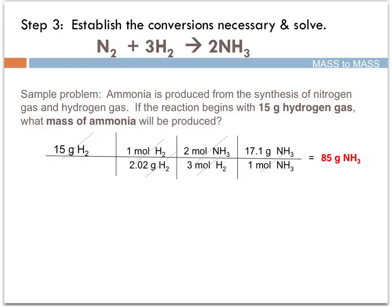Step 1 is the given. Step 2 is the molar mass of hydrogen gas. Step 3 is the molar ratio to go from hydrogen to ammonia. And the final step is the molar mass of ammonia.